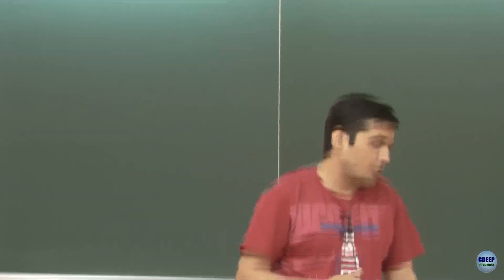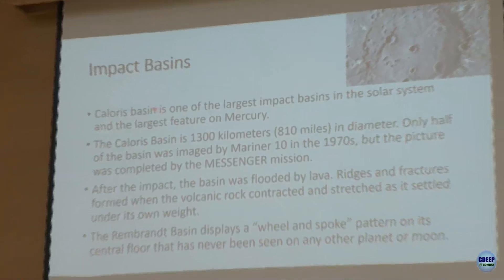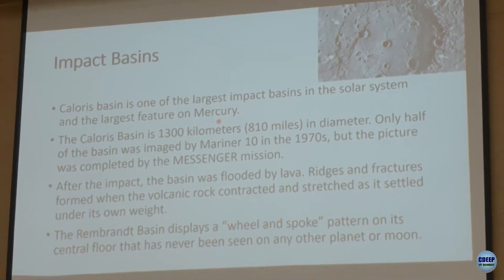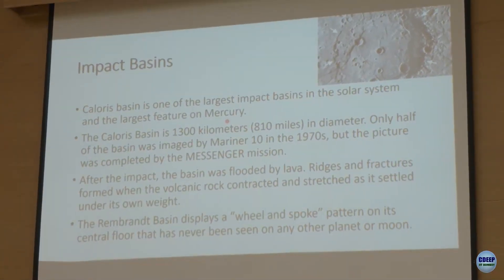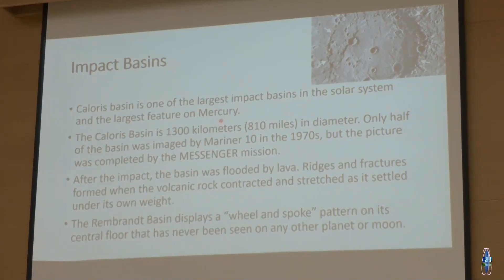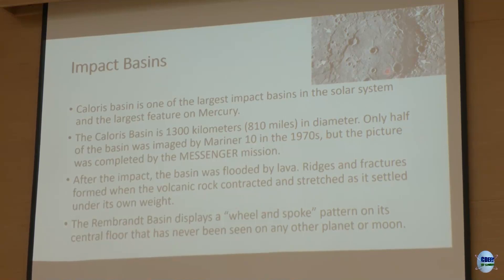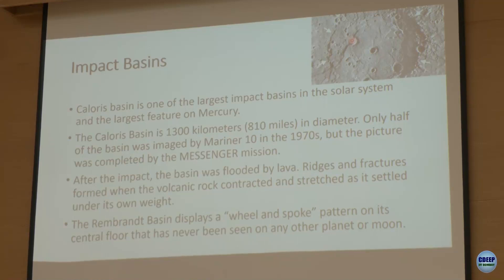Some notable impact basins: the Caloris Basin is one of the largest in the solar system — second only to the Moon's South Pole–Aitken Basin — about 1300 km wide. The Rembrandt Basin has a distinctive wheel-and-spoke pattern with radial spikes extending from the center, another feature unique to Mercury, imaged by the Messenger mission.